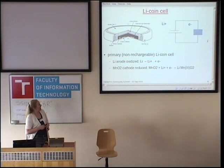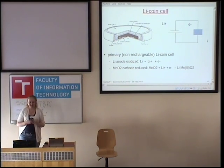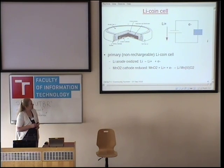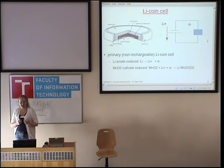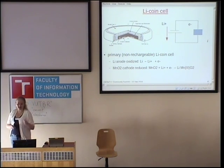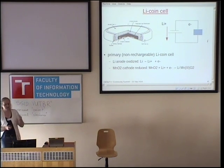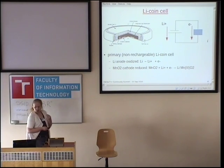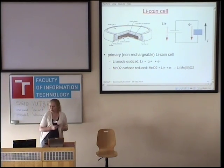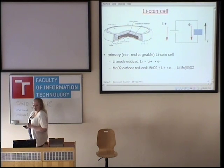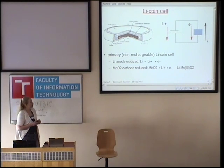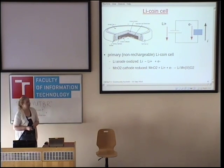A battery has an anode, a cathode, an electrolyte and separator between them. When you discharge the battery, the lithium anode is oxidized — we get lithium ions and electrons. Lithium ions diffuse through the electrolyte, and the electrons diffuse through the load — we usually call that current. Then the manganese dioxide cathode is reduced to form lithium manganese dioxide. This is a non-reversible chemical reaction, which is why this is a non-rechargeable battery.